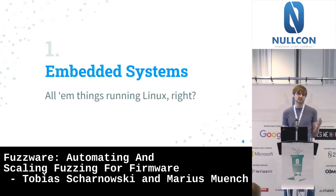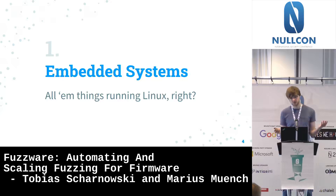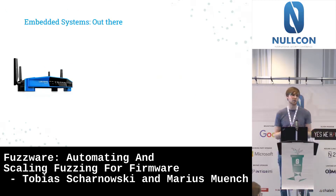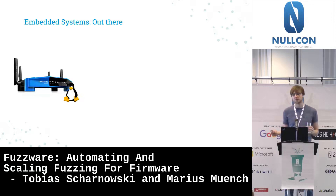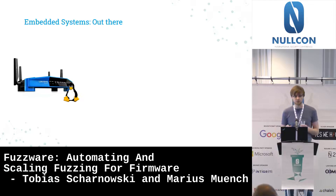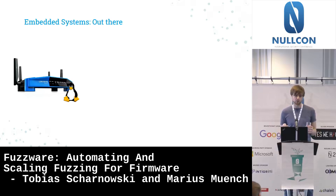Let's understand a bit about the systems we are going to talk about today: embedded systems. A lot of you might think about something like a router that you have at home. Those systems run Linux a lot — sometimes a boiled-down Linux in the form of BusyBox. But this type of embedded system is not the only one, and there are a lot of other systems out there with very different properties.